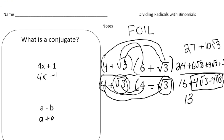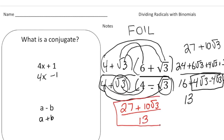So our final answer is going to be 27 plus 10 radical 3, all over 13. And here's the key thing — look at our denominator. It's no longer a square root, and that's because we multiplied both the numerator and denominator by the conjugate. Why don't you pause the video and try the 'your turn' problem. Take your time with these — they're a little bit tricky. When you're done, hit play and you can see how you did. Good luck.